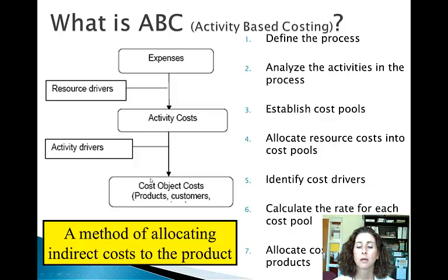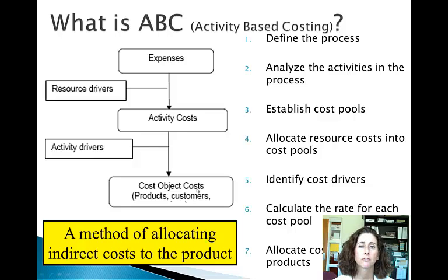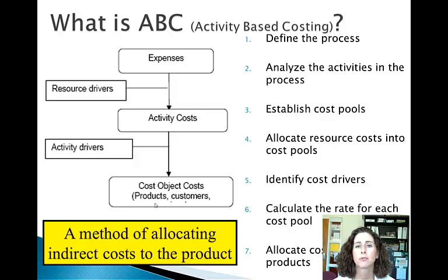Then I take the rates and apply them to the individual products. If I have a cake that's baked for one hour and takes 15 minutes to frost, it gets one hour's worth of baking costs and 15 minutes' worth of frosting overhead. If I have a more complex cake that takes two or three hours to bake and three or four hours to frost, it gets proportionally more of each. This is the end of part one. The next video will go through a specific numerical example. Thank you.